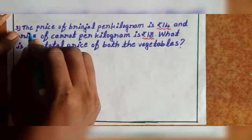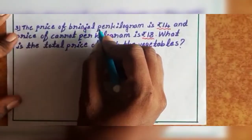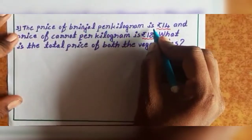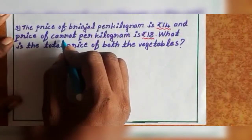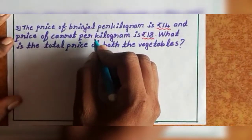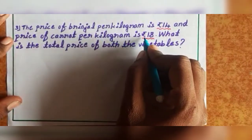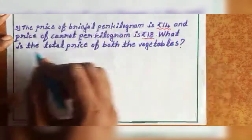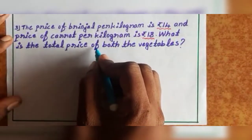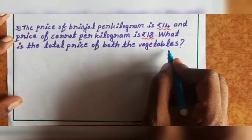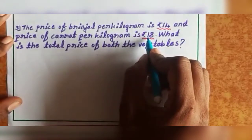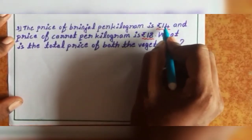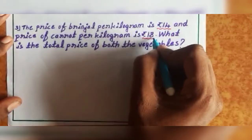Next, third one. The price of brinjal per kilogram is 14 rupees and the price of carrot per kilogram is 18 rupees. What is the total price of both the vegetables? So add 14 plus 18 to get the answer.